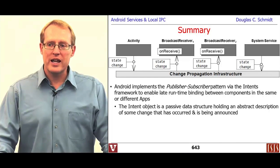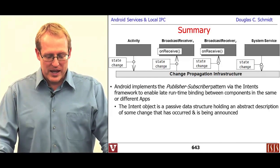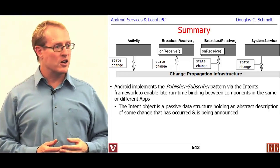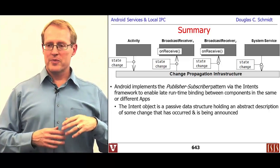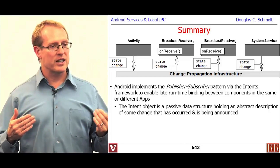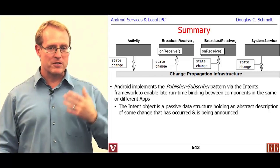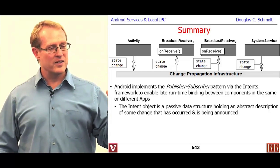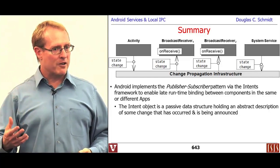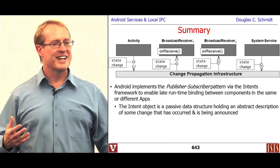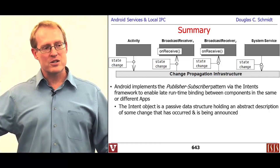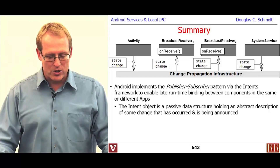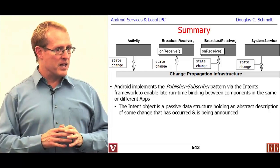Android implements publisher-subscriber via intents and the intent framework, giving you a nice late-binding effect where you can make changes after the system is running. The phone app registers dynamically when it starts up — it creates an intent filter saying it wants to hear about the action battery low intent. The battery service doesn't know about the phone app or anything else; it just knows that when the battery is low, it's going to tell anybody who cares. The intent data is a passive descriptor — a data structure that keeps track of what has changed and is being announced.